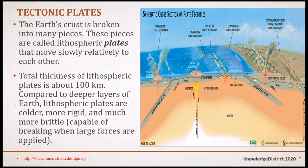The Earth's crust is broken into many pieces. These pieces are called lithospheric plates that move slowly relative to each other. The total thickness of lithospheric plates is about 100 kilometers. Compared to deeper layers of the Earth, lithospheric plates are colder, more rigid, and much more brittle — capable of breaking when large forces are applied.